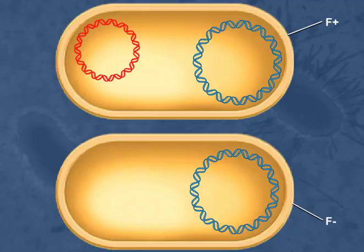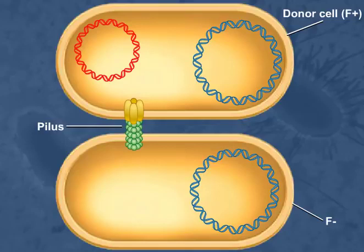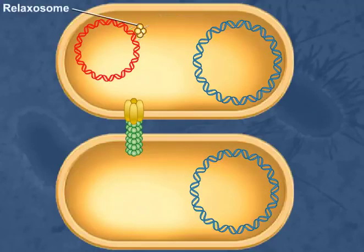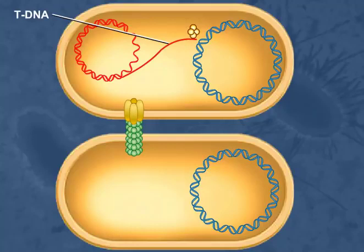An F-plus cell or donor produces a structure called a pilus to connect with another recipient cell. To begin conjugation, the F-factor is cut at a specific region called the origin of transfer by a protein assembly called the relaxosome, which associates with the strand to be transferred, or the T-DNA strand.